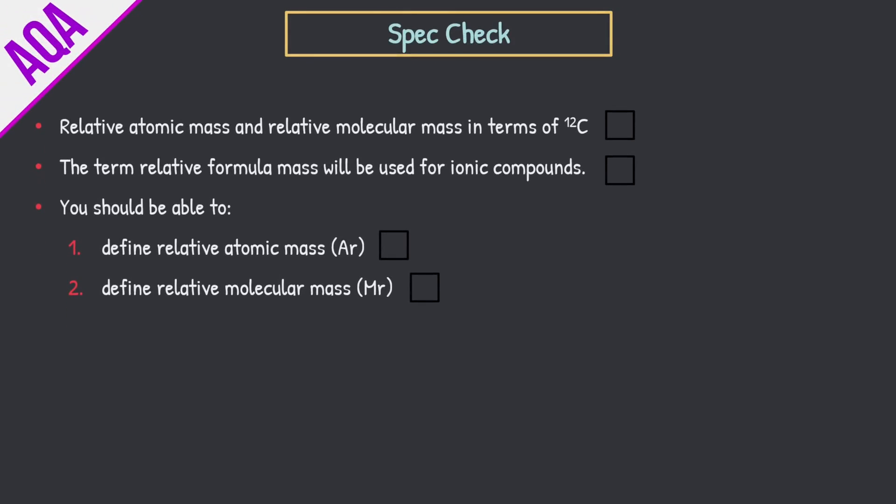Spec check. Going through the specification, making sure we ticked off everything you need to know. First off, relative atomic mass and relative molecular mass in terms of carbon 12. Easy stuff. The term relative formula mass will be used for ionic compounds. We went through that as well. And then you should be able to define relative atomic mass given the symbol Ar and relative molecular mass given the symbol Mr. Now what you'll notice here is with relative atomic mass, in the amount of substance topic it's given the symbol Ar.